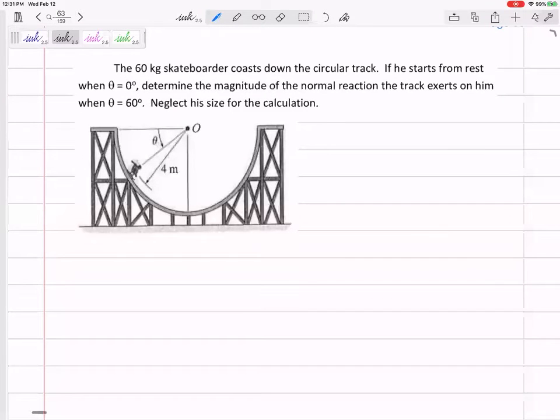But what if we had a 60-kilogram skateboarder coasting down the circular track? If he starts from rest when theta equals zero, determine the magnitude of the normal reaction the track exerts on him when theta equals 60 degrees. Neglect his size for the calculation.